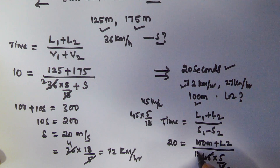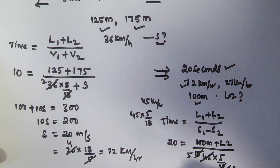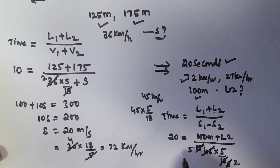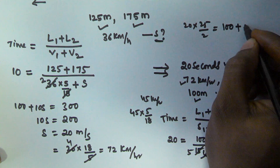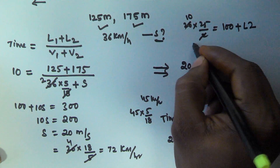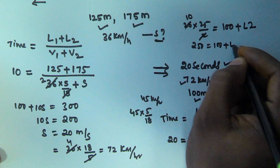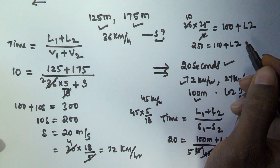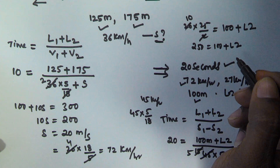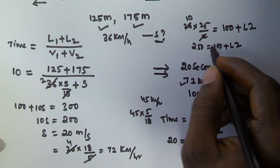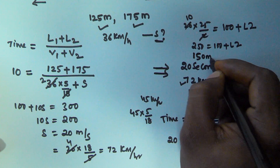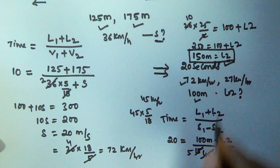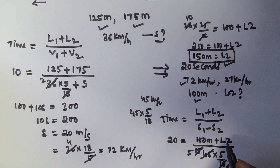45 × (5/18) = 25/2. Doing the cross multiplication: 20 × (25/2) = 100 + L2, so 250 = 100 + L2. Subtracting 100, L2 = 150 meters. The length of the second train is 150 meters. Thank you very much for watching this video, I hope you got this. Please subscribe to my channel.